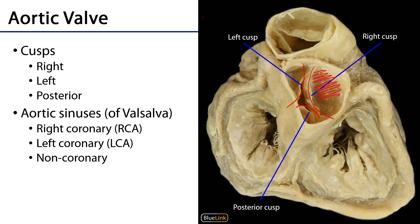I'm coloring in the right aortic sinus, which is going to serve the right coronary artery. Now I'm coloring in the left coronary sinus, which serves the left coronary artery.